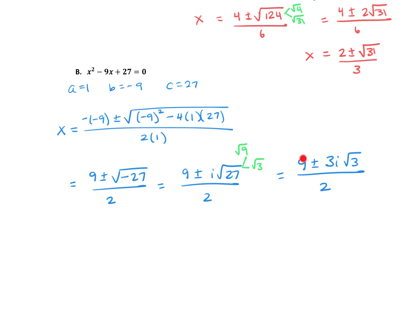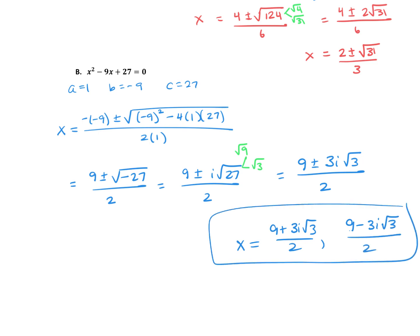So we have 9 plus or minus 3i root 3, all over 2. Can we do any reducing? Look at your triangle of numbers: we have a 9, a 3, and a 2 — can they be reduced by the same value? They cannot, so we can't do any more reducing. Our two solutions are: 9 plus 3i root 3 over 2, and 9 minus 3i root 3 over 2.